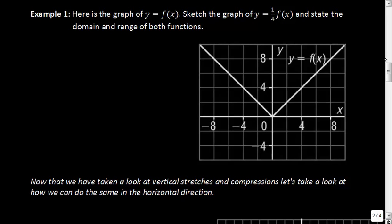So what do we know about all the ordered pairs? All of these ordered pairs are going to get quartered, but only the y-coordinates. Notice these are going up by increments of 2 in both axes. So this ordered pair that looks like it's at (1, 1) is actually at (2, 2). That ordered pair at (2, 2) is going to stay x = 2, but we take the y value of 2 and quarter it, which gives us ½.